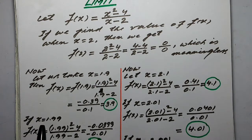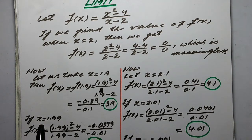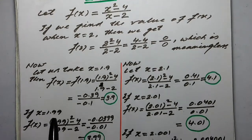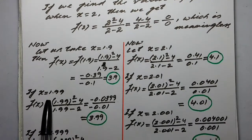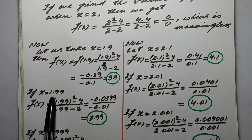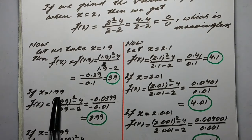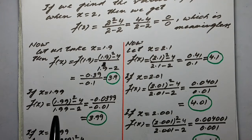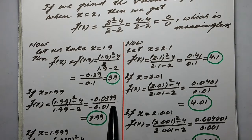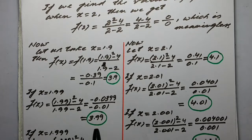Now let us take another value which is closer to 2 — we take x equal to 1.99. f(1.99) is equal to 1.99 squared minus 4 upon 1.99 minus 2, which is equal to minus 0.0399 upon minus 0.01, which is equal to 3.99.